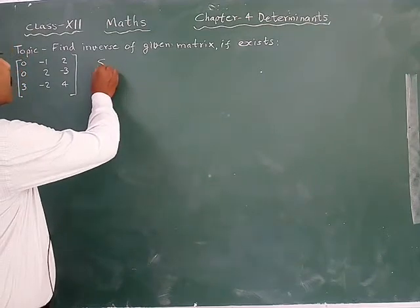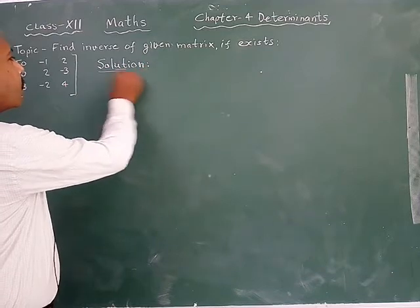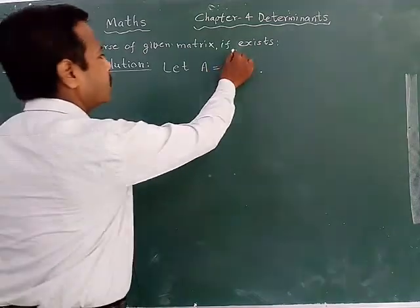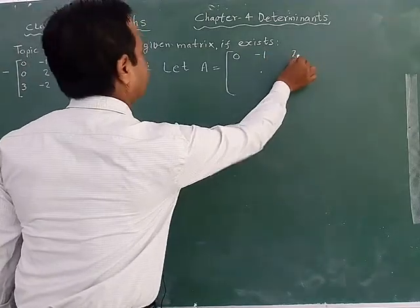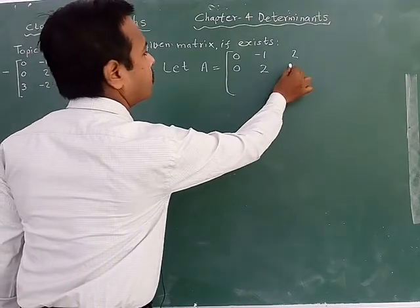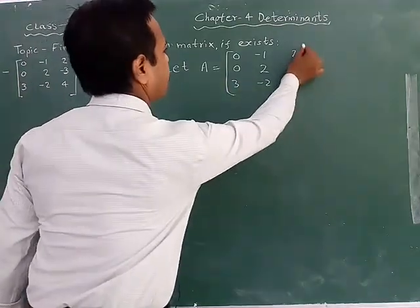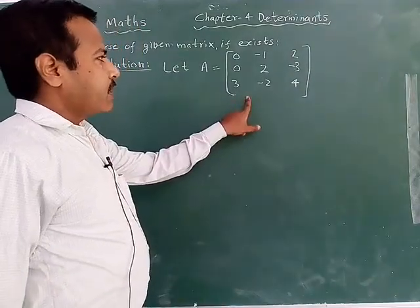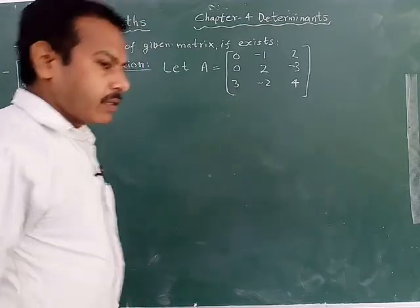First of all, solution. Let A be equal to the given matrix: 0, minus 1, 2, 0, 2, minus 3, 3, minus 2, 4. Friends, pay attention. It is the given matrix, and I let A equal to this matrix.